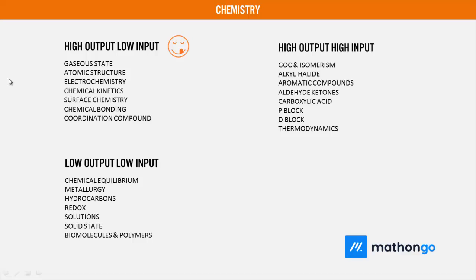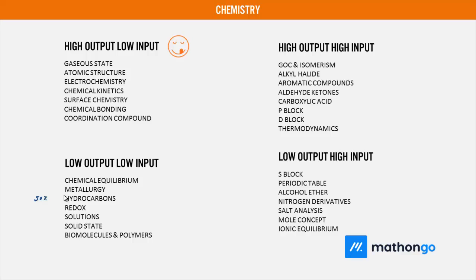The third category is low output but low input. So chemical equilibrium, metallurgy, hydrocarbons, redox, solutions, solid state, and biomolecules and polymers. In this case, the probability of questions is, of course, 50% chances are there that it will come or not, but still low input game. For example, chemical equilibrium is a low input game.